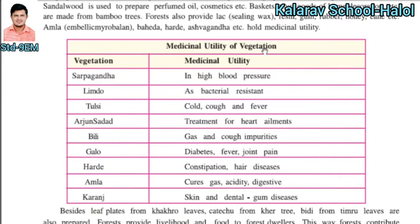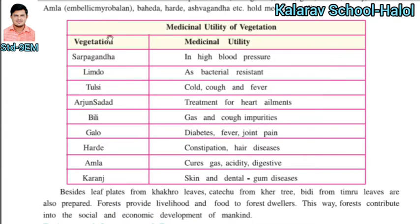The medicinal utility of vegetation is given here in a table, with vegetation on one side and medicinal utility on the other. Sarpagandha is useful for high blood pressure. Limro is very useful for cold, cough and fever. Tulsi is useful for bacterial resistance. Arjun is useful for heart ailments. Sadad is useful for gas and cough impurities. Billi is very useful for diabetes, fever and joint pain.